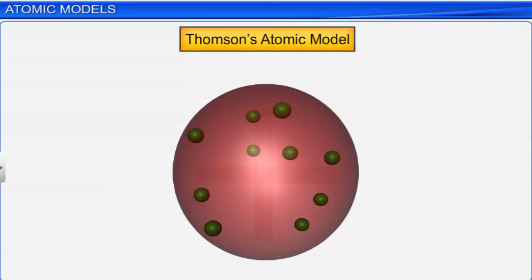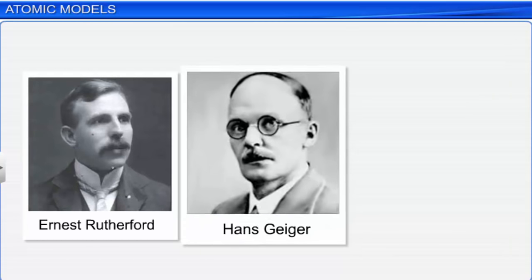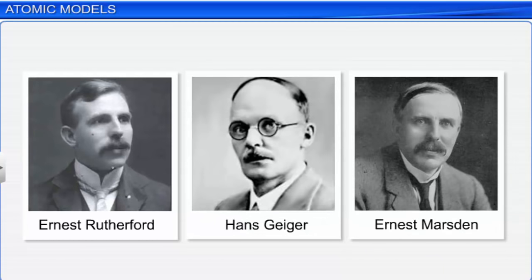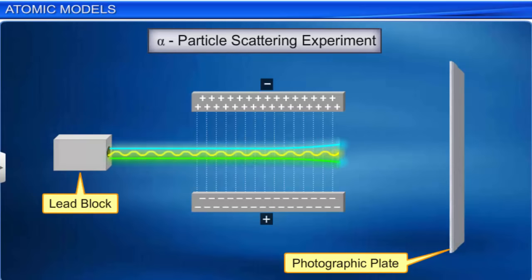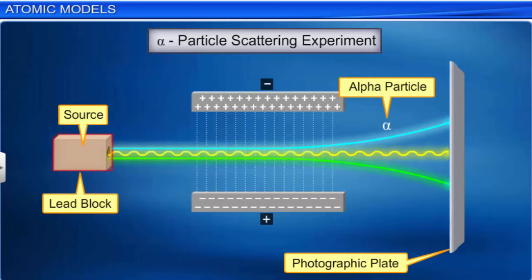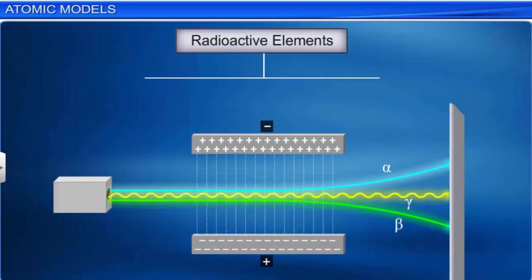In order to validate Thomson's atomic model, in 1911, Rutherford and his students Hans Geiger and Ernest Marsden conducted an experiment called the gold foil experiment, or alpha particle scattering experiment. Before we proceed, let us acquaint ourselves with alpha particles, their source, and their characteristics. We know that certain elements emit radiation on their own, and this phenomenon is called radioactivity. The elements are known as radioactive elements. Alpha rays are emitted by these radioactive elements, along with beta and gamma rays.